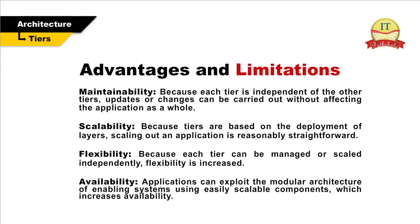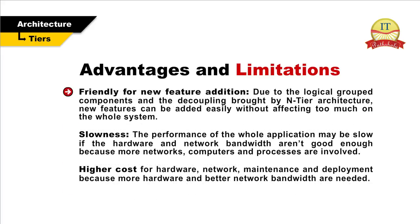Advantages and limitations of n-tier architecture: Maintainability — each tier is independent of other tiers, so updates or changes can be carried out without affecting the application as a whole. Scalability — because tiers are based on the deployment of layers, scaling out an application is reasonably straightforward. Flexibility — each tier can be managed or scaled independently. Availability — applications can exploit the modular architecture of enabling systems using easily scalable components which increases availability. New features can be added easily without affecting too much of the whole system due to logical grouping and decoupling. However, performance may be slow if hardware and network bandwidths aren't sufficient, and there is a higher cost for hardware, network, maintenance and deployment because more hardware and better network bandwidths are needed.